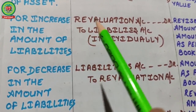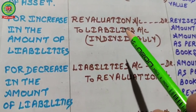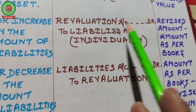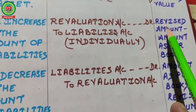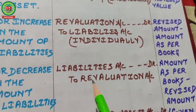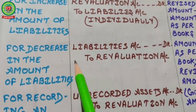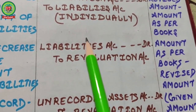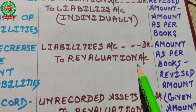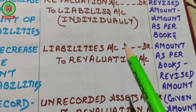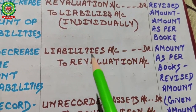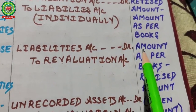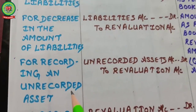For increase in the amount of liabilities — if creditors increase from 50,000 to 60,000, the increase of 10,000 is a loss. Entry: Revaluation Account debited, Liabilities Account credited. Amount is revised value minus book value. For decrease in the amount of liabilities — if creditors decrease from 50,000 to 40,000, entry: Liabilities Account debited, Revaluation Account credited. Amount is book value minus revised value. Credit to revaluation means gain.